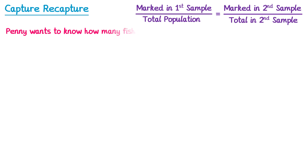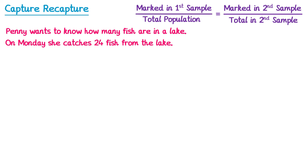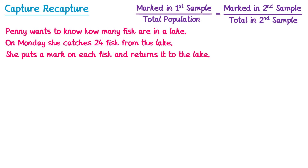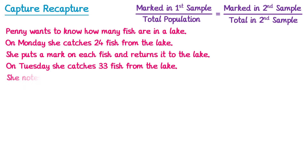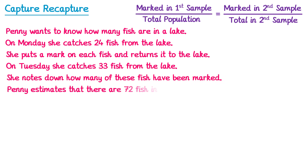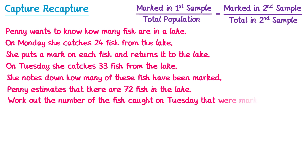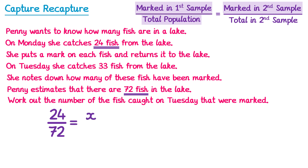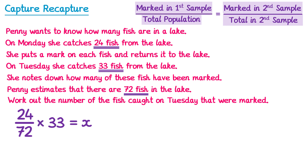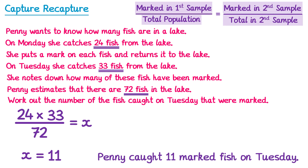Final example: Penny wants to know how many fish are in a lake. On Monday she catches 24 fish, marks them, and returns them. On Tuesday she catches 33 fish. Penny estimates there are 72 fish in the lake, and we need to work out how many of Tuesday's fish were marked. Using the formula: 24 over 72 equals x over 33. Multiplying both sides by 33 gives x equals 24 times 33 over 72, which equals 11. Penny caught 11 marked fish on Tuesday.